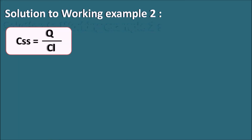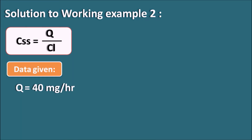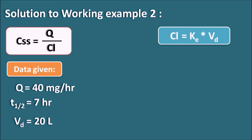We can use the same equation CSS = Q / clearance. Q is given, T½ is given, and Vd is given, but clearance is not given directly. So we calculate clearance from the given data. Clearance = Ke × Vd. Here Vd is given but Ke is not given, so we obtain Ke from the half-life using the first order kinetics equation: Ke = 0.693 / T½.